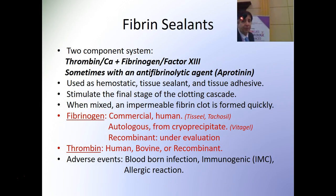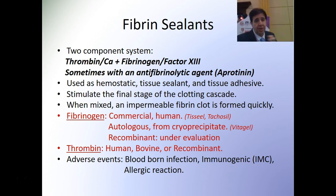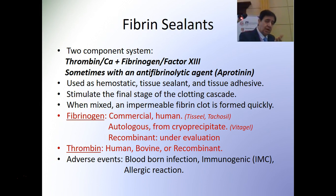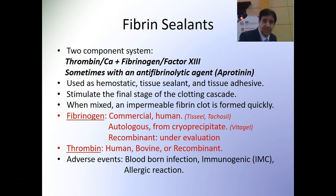The next category is fibrin sealants — a combination of thrombin with fibrinogen. In some commercial products, it is also mixed with an antifibrinolytic agent. These are used as hemostatic agents, tissue sealants, and tissue adhesives. They stimulate the final stage of the clotting cascade, and when these two products are mixed together, they create an impermeable fibrin clot which forms quickly.